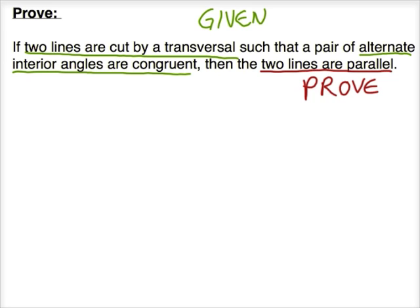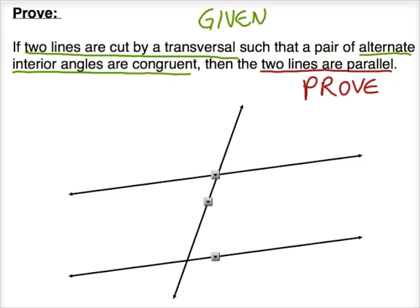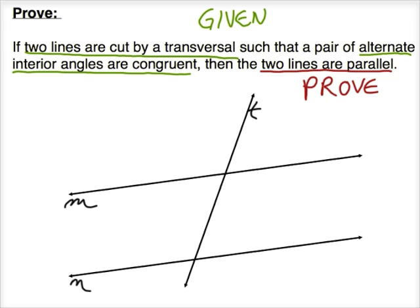So let's draw out the given information. Here we have two lines cut by a transversal. Let's call one of the lines M, N, and we could call the transversal T. Our job is to show that alternate interior angles are congruent. The alternate interior angles could refer to this angle and this angle — those two blue angles — or it could also refer to these two green angles. For sake of argument, we only need to pick one pair, so I'll pick the blue angles. We're given that those two angles are congruent. Let's call this angle 1 and angle 2, so we know that angle 1 and angle 2 are congruent.